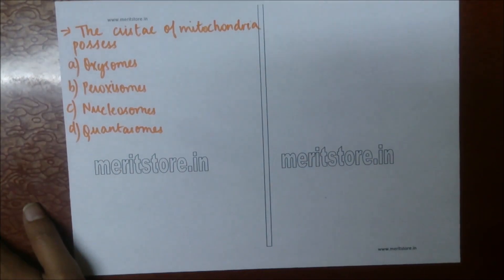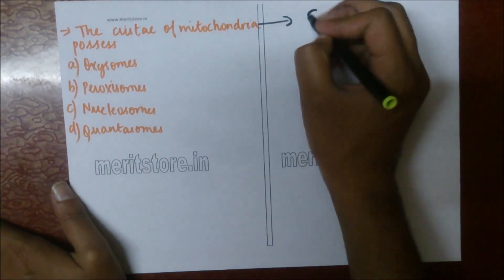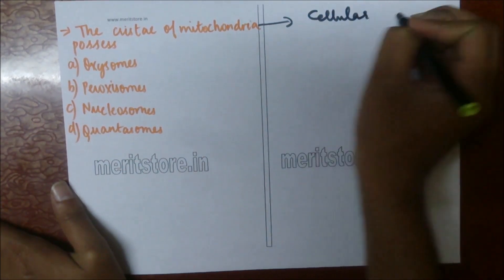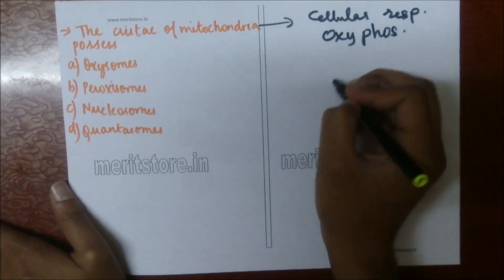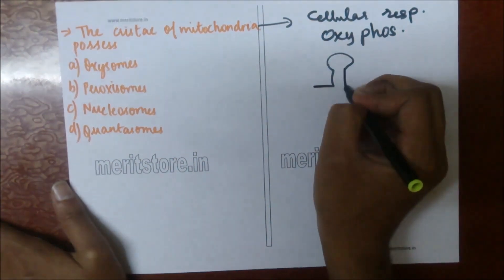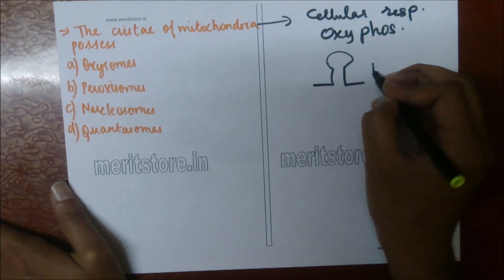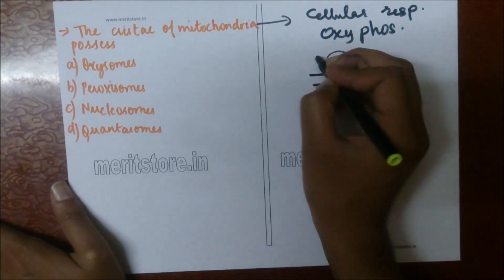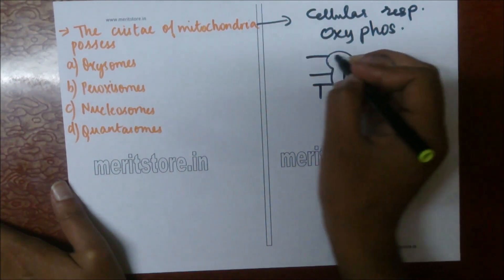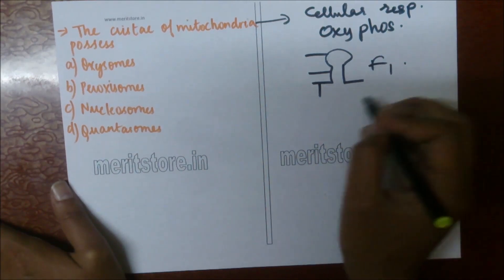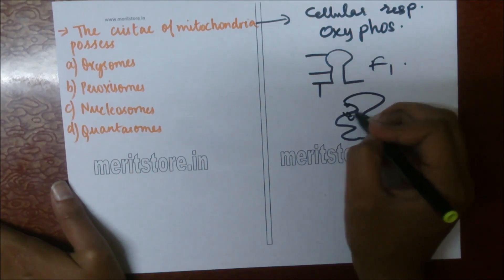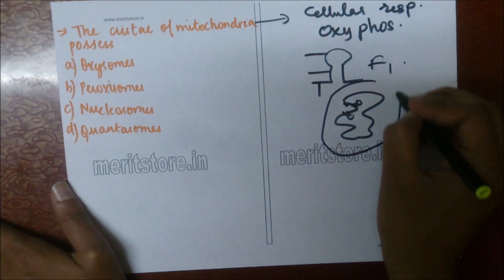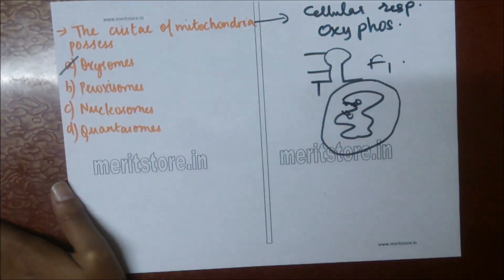The cristae of mitochondria possess: A) oxysomes, B) peroxisomes, C) nucleosomes, D) quantosomes. Mitochondria helps in cellular respiration and oxidative phosphorylation. This takes place in oxysomes, also known as F1 particles, which have a base, stalk, and headpiece — with enzymes present in the headpiece. These are present in the cristae of the mitochondria, which is the inner wall. So option A is the correct answer.